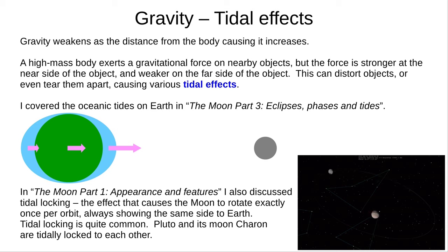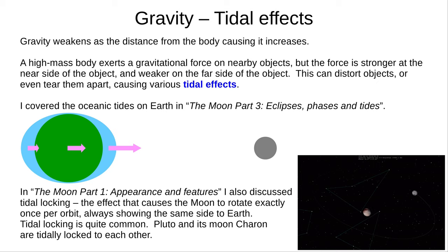Gravity weakens as the distance from the central body increases. A high-mass body exerts a gravitational force on nearby objects, but the force is stronger on the side nearer the central body. This causes various tidal effects, and can distort objects or even tear them apart.